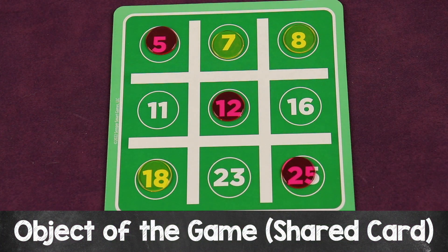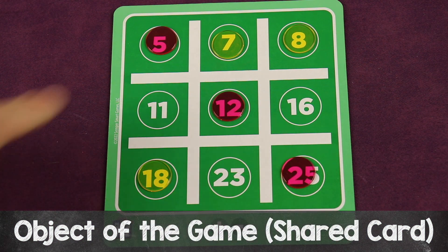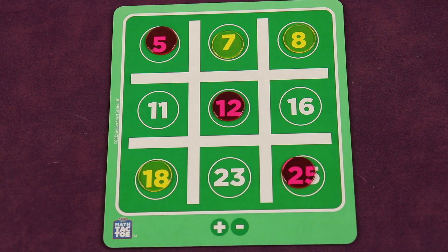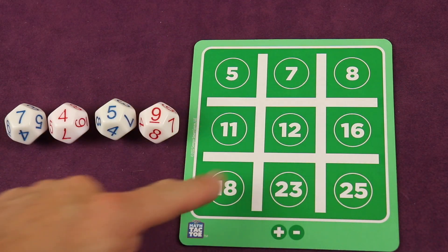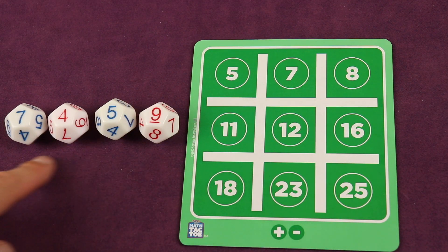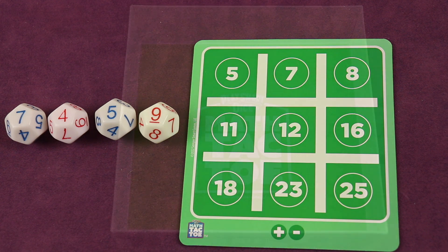In this version, you're trying to be the first to get three of your chips in a row—horizontal, vertical, or diagonal—playing on a shared grid. When you start the game, make sure the grid is empty with no player chips on there. Give the four dice to the youngest player and they're going to roll them.